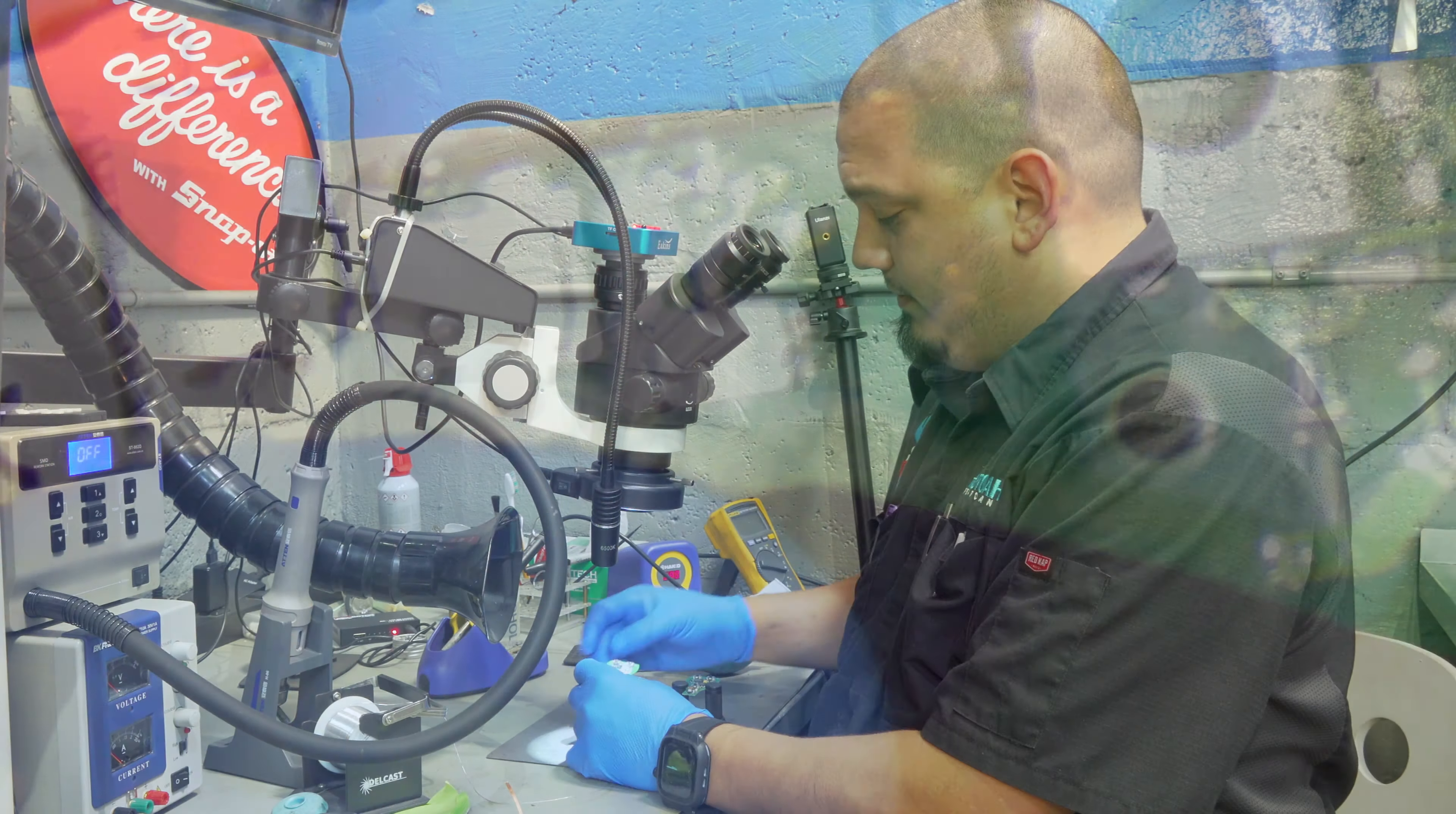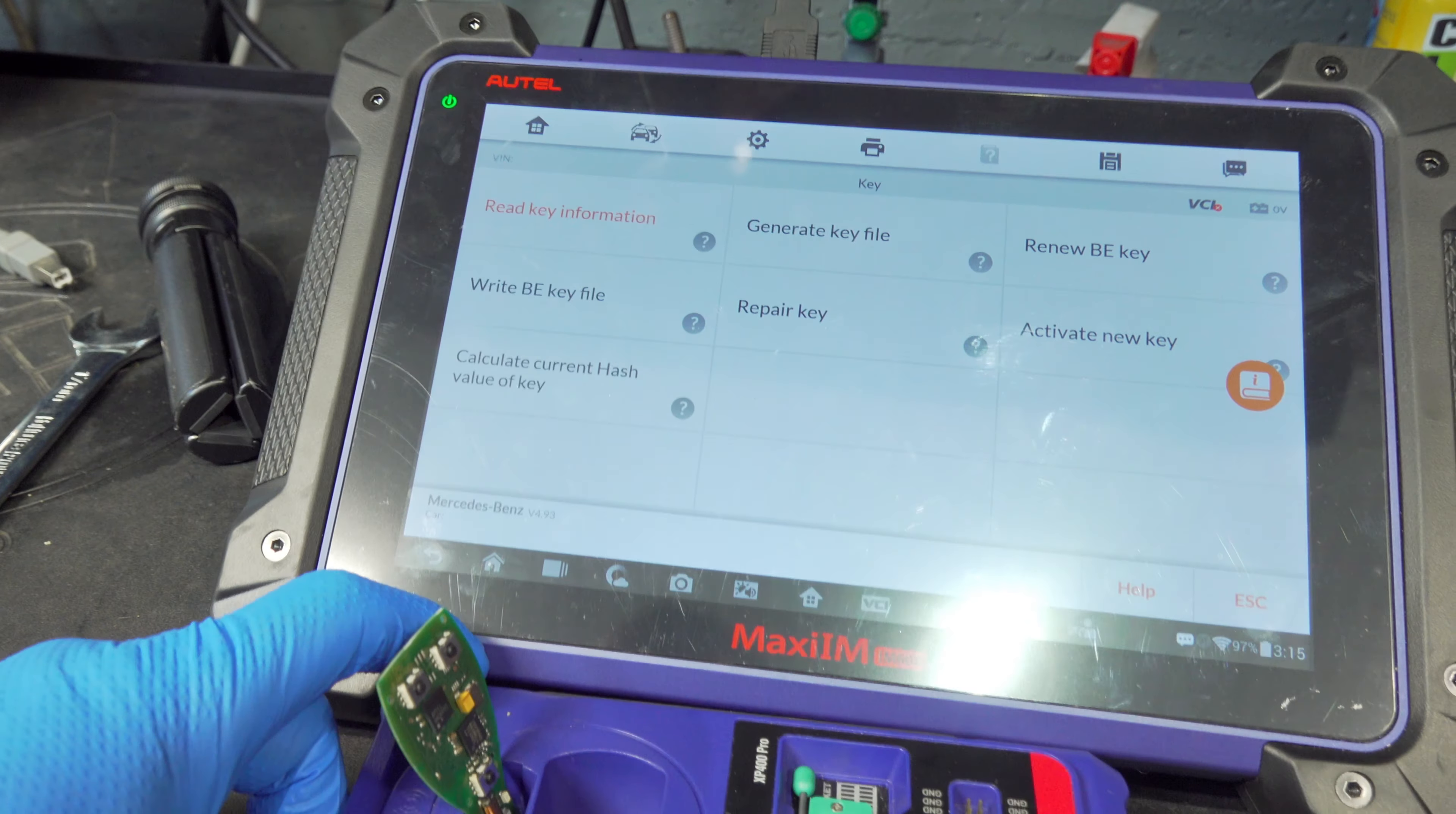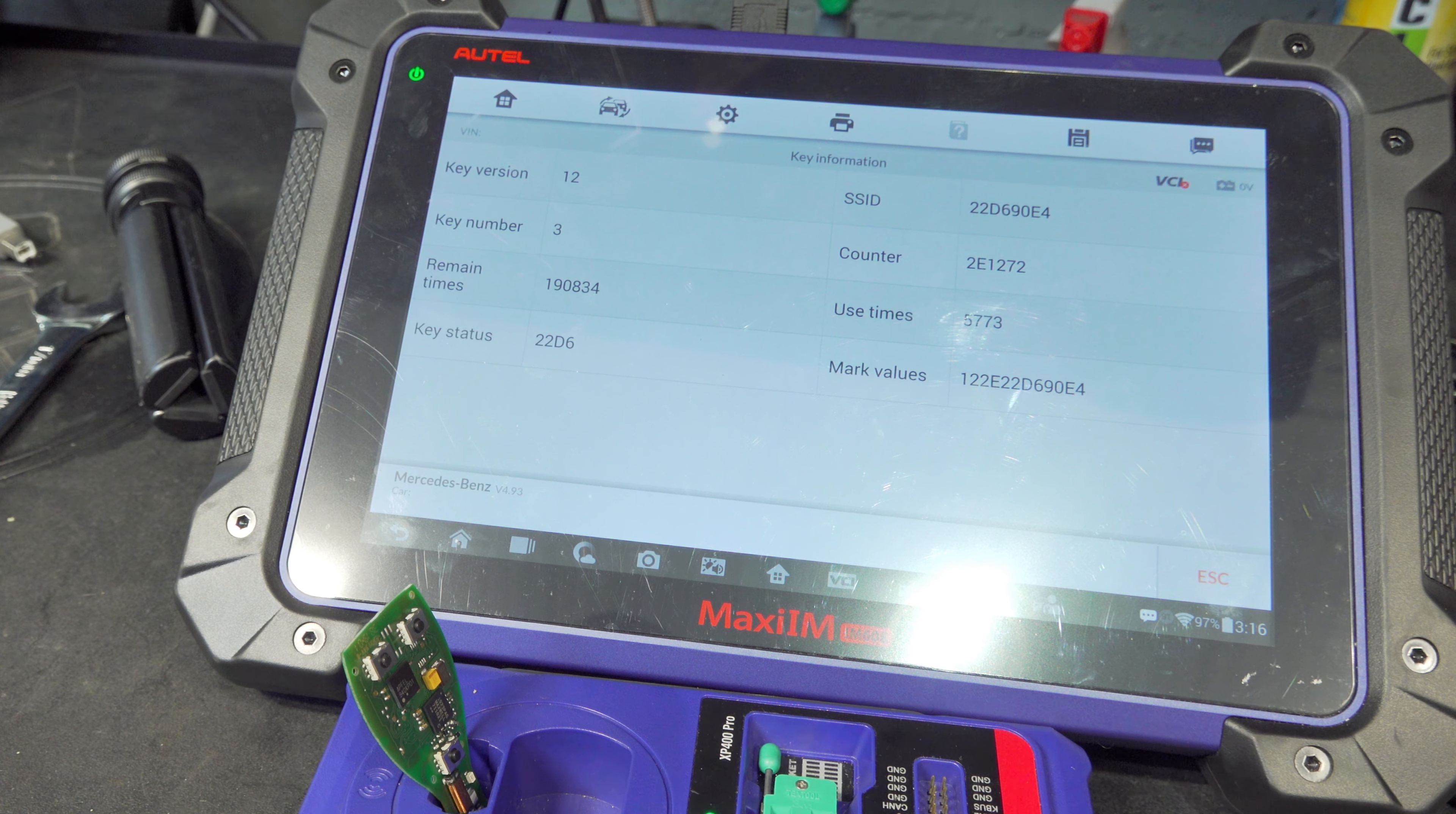All right, let's go ahead and give it a whirl. As per usual, I use the IM608. That is my go-to tool right now. We're just going to lay this key down right in the slot and try to read key information. Nice. And that's a fix, my friends.